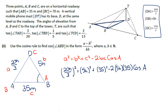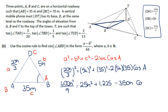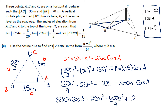Squaring the fraction gives 400H²/9 on the left. On the right: 25H² + 1225 − 350H·cos A. Bringing cos A across: 350H·cos A = 25H² − 400H²/9 + 1225. If you're happy working with fractions you can treat 25 minus 400 over 9 as a single fraction; otherwise, let's multiply everything by 9 to clear the denominators.